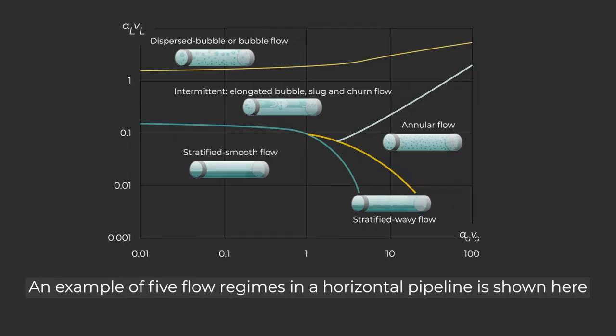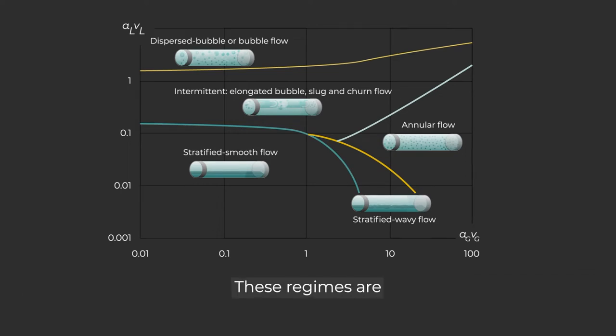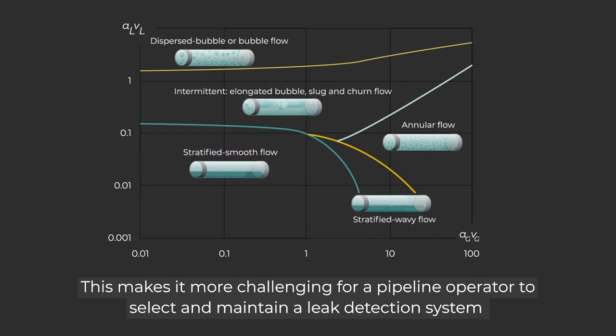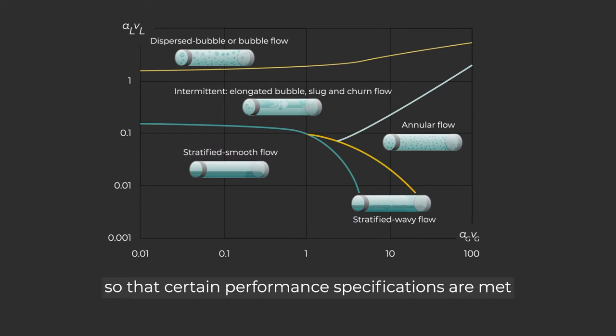An example of five flow regimes in a horizontal pipeline is shown here. These regimes are dispersed bubble or bubble flow, intermittent elongated bubble, slug and churn flow, stratified smooth and wavy flow, and annular flow. It is possible for a pipeline to be running under different flow regimes at different times, making it more challenging to maintain a leak detection system.